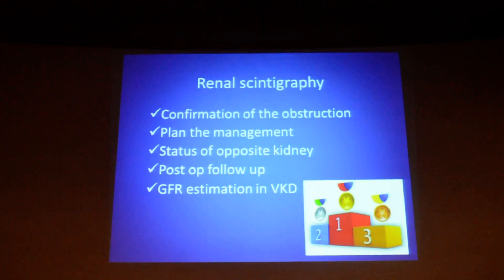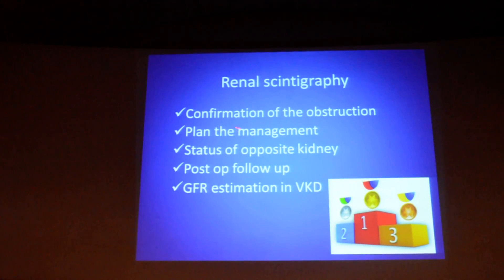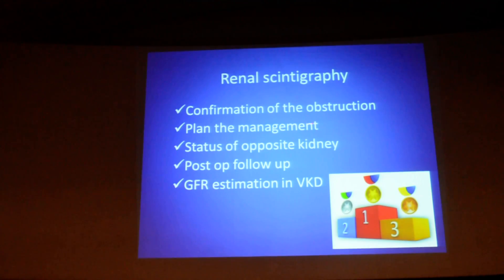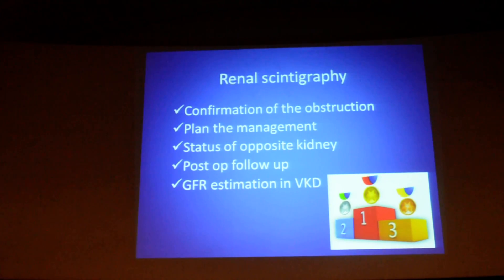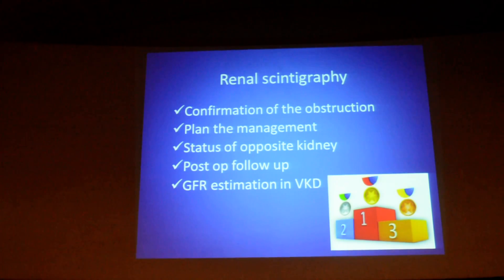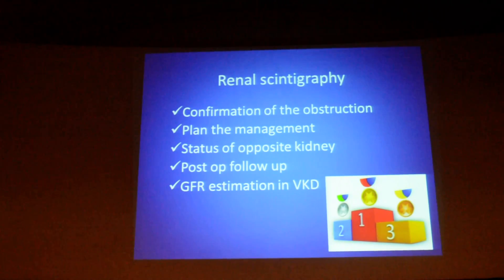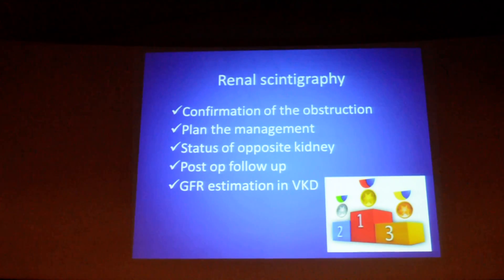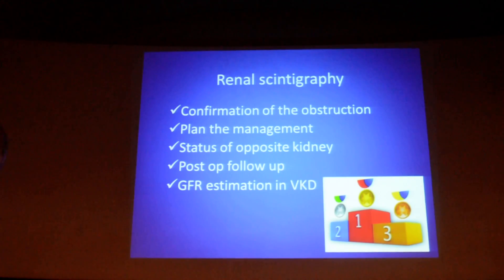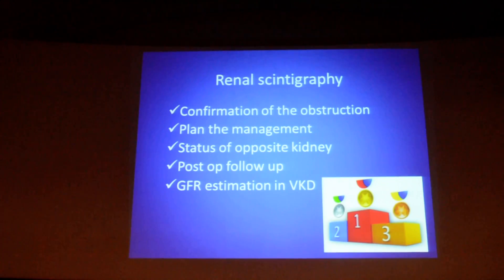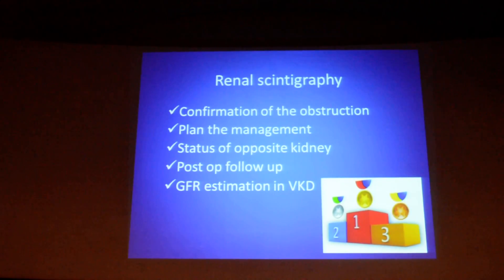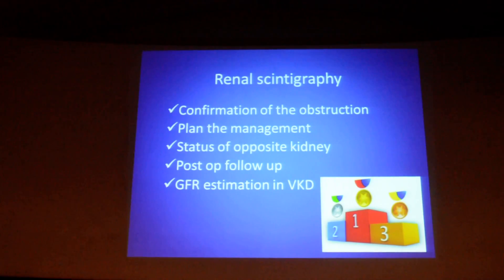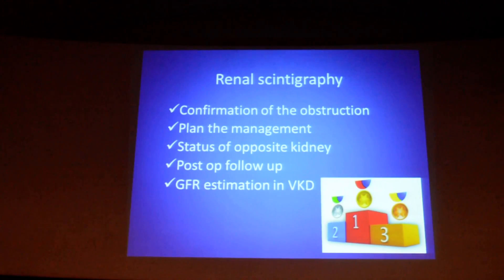To sum up, renal scintigraphy always stays ahead for the confirmation of obstruction and thereby planning management. Most importantly, it is used to evaluate the status of the opposite kidney when nephrectomy is being contemplated, in post-operative follow-up of corrected congenital anomalies, and for GFR estimation — which is now one important parameter required by organ transplant units for evaluating voluntary kidney donors. Thank you.